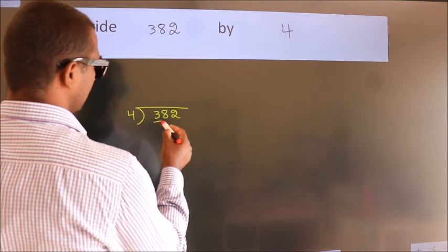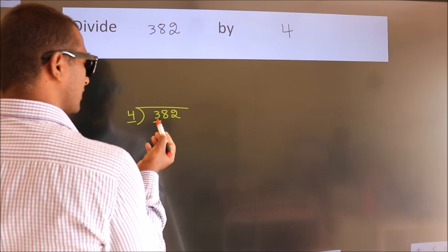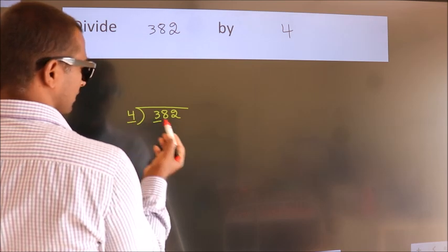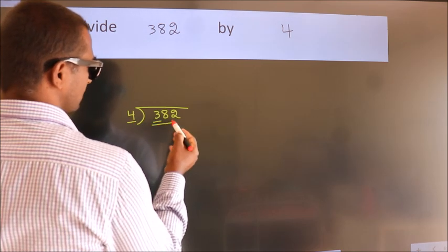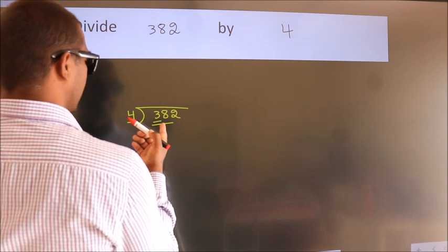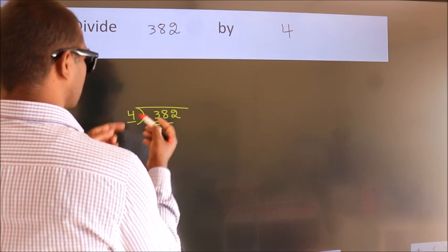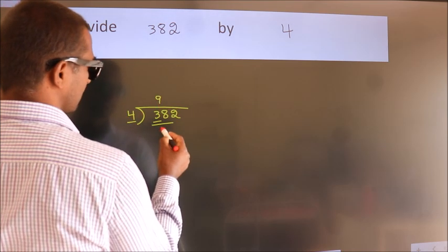Next, here we have 3, here 4. 3 is smaller than 4, so we should take 2 numbers, 38. A number close to 38 in the 4 table is 4 nines, which is 36.